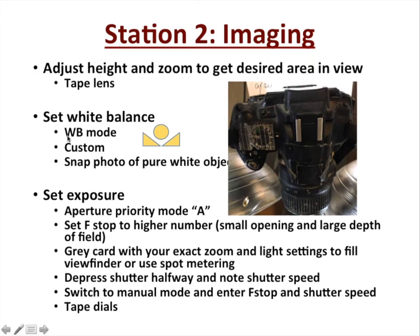Next step: we set the white balance. There's a WB button on the back of the camera — press it, turn the dial till you get a custom setting. Then you put something pure white underneath; if you use paper, stack up several so none of the background darkness bleeds through. A white board works well. You can also use photography-intended cards that are pure white for setting white balance. There are links in the handout for where to get those. You simply place a pure white object under the camera, press the button, and your white balance is set.